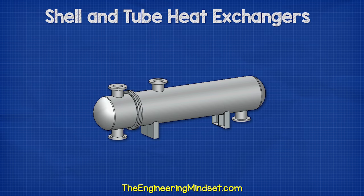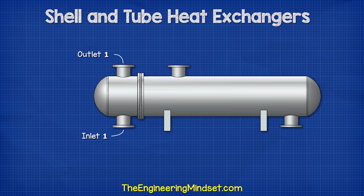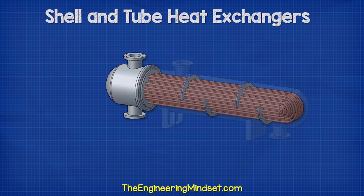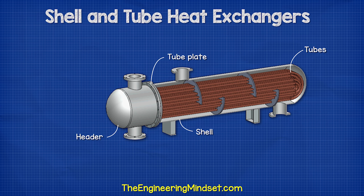Shell and tube heat exchangers will look something like this. With this design we normally find the inlet and the outlet for one fluid at the very end of the heat exchanger, known as the header. Then we have another inlet and outlet for fluid 2 on the main body, known as the shell. Inside the unit we have the tubes, which bend and loop around to start and finish at the tube plate, which sits between the shell and the header.